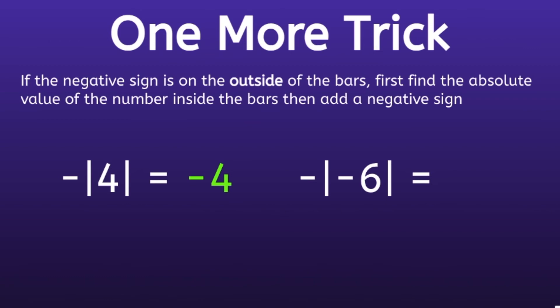In the second one, we have the negative absolute value of negative 6. And the first thing we have to do is find the absolute value of the number inside the bars. And the absolute value of negative 6 is positive 6. Last thing we have to do is add that negative sign. So the negative absolute value of negative 6 will be negative 6.